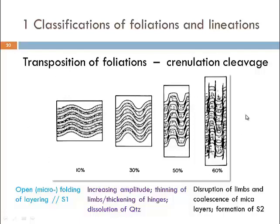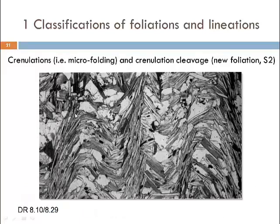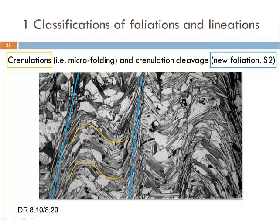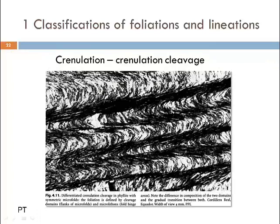At microscale, thin section photographs show examples of microfolding — crenulations. One would become a microlithon with lower mica abundance, while the newly forming S2 foliations are visible on either side. In another example from Passchier and Trouw, crenulations in the microlithons and new S2 foliation in the cleavage domains are clearly visible — this is the crenulation cleavage, with crenulations recognizable throughout the slide.